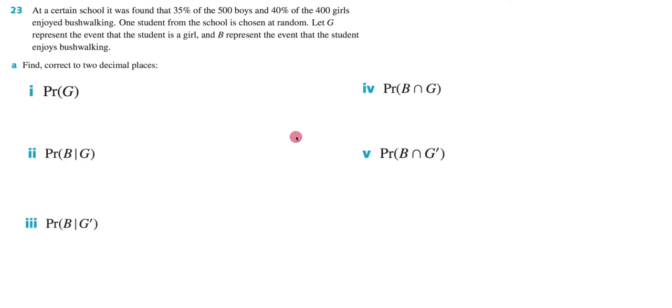Alright, so we are doing exercise 9F, which is all about conditional probability. In this video we're looking at question 23A, which reads: at a certain school, it was found that 35% of the 500 boys and 40% of the 400 girls enjoyed bushwalking.